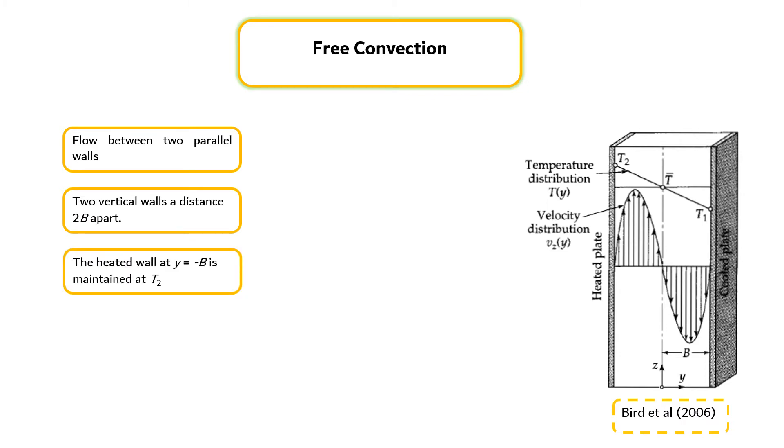Y equals minus B is maintained at temperature T2, and the cool wall at Y equals plus B is maintained at temperature T1. It is assumed that the temperature difference is sufficiently small that the terms containing delta T squared can be neglected.